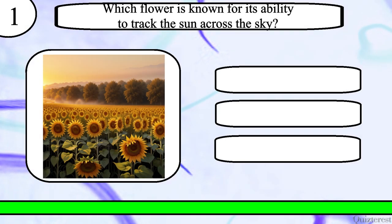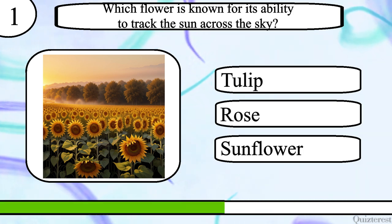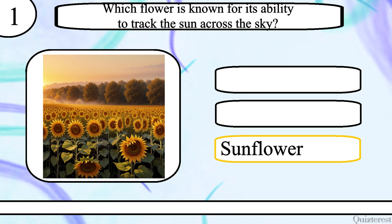Question 1. Which flower is known for its ability to track the sun across the sky? Tulip, rose or sunflower? The correct answer is sunflower.